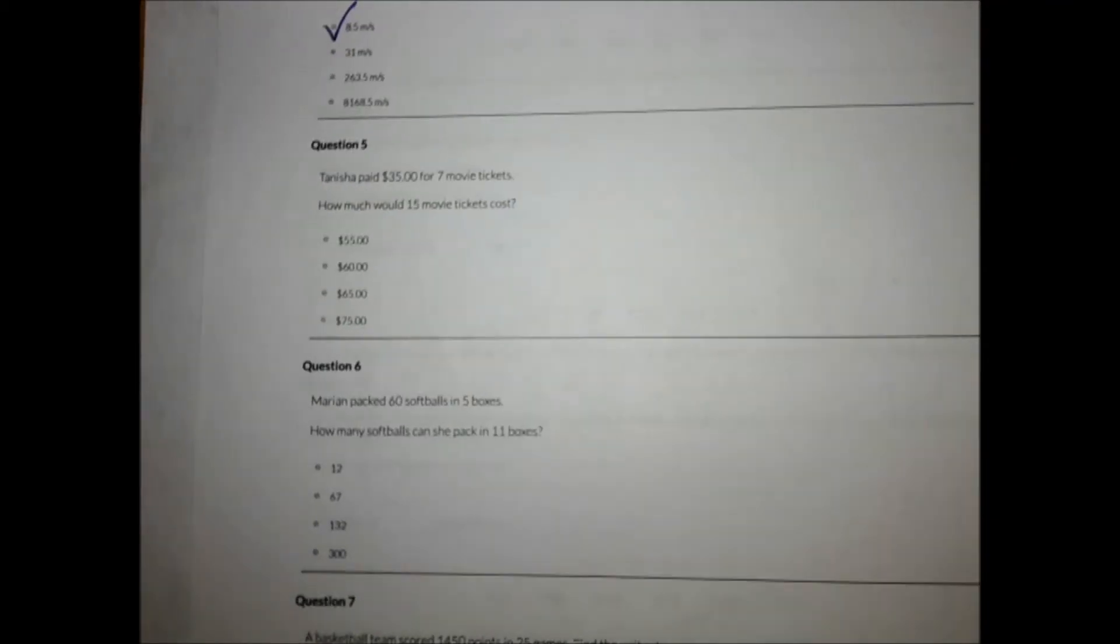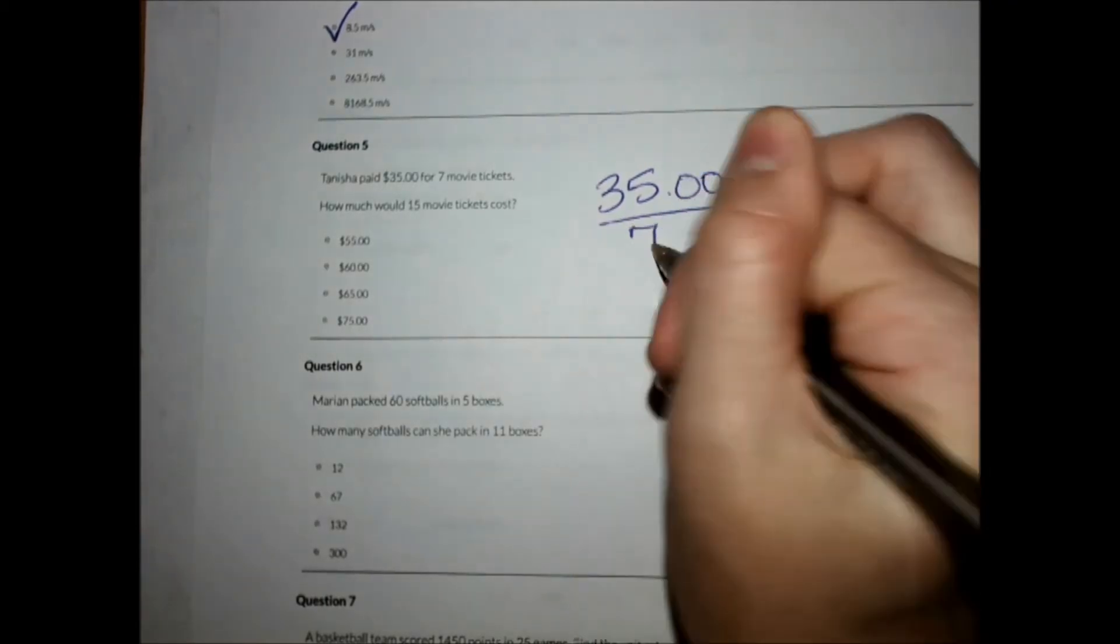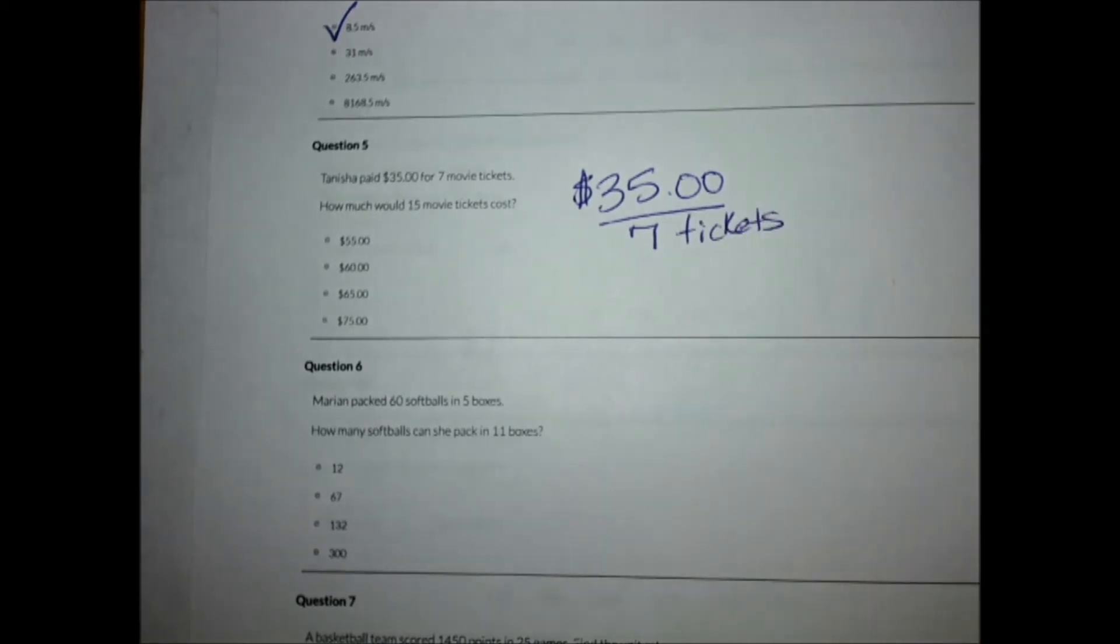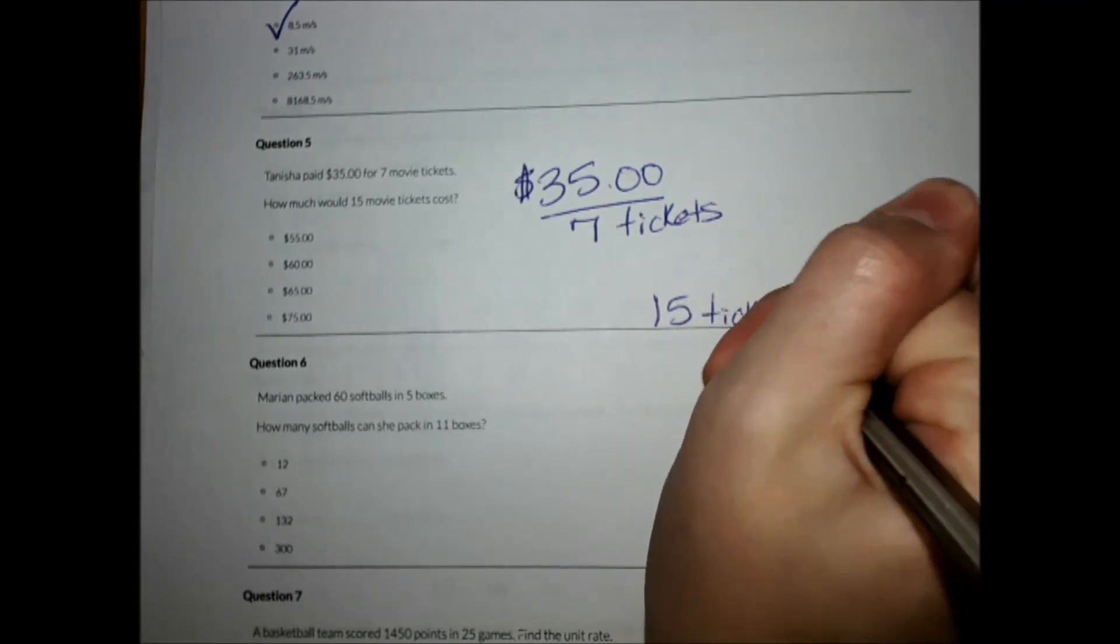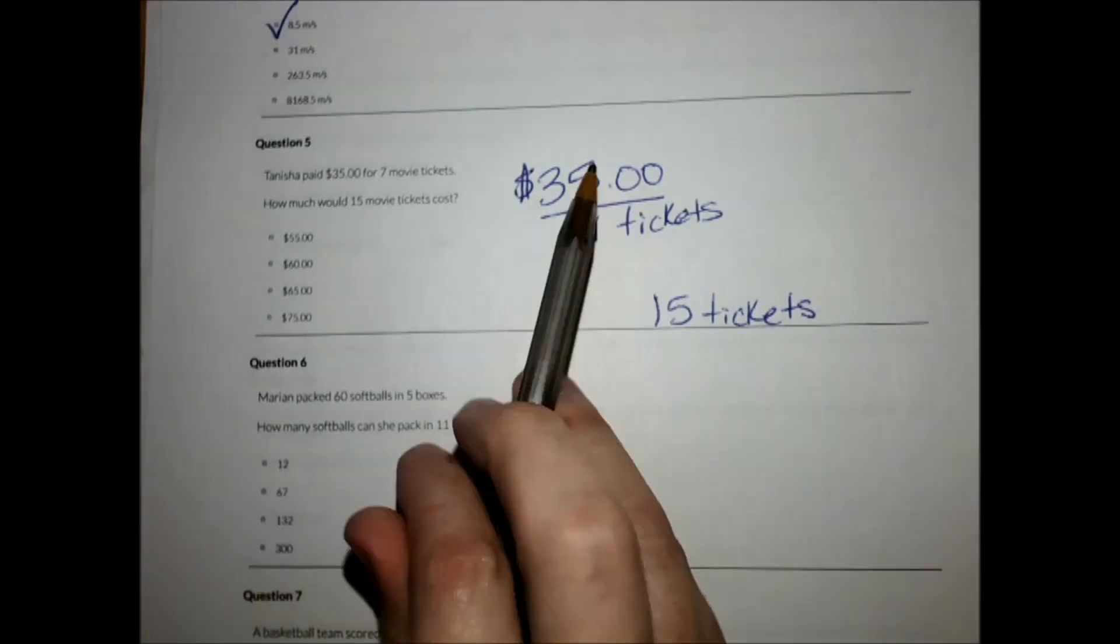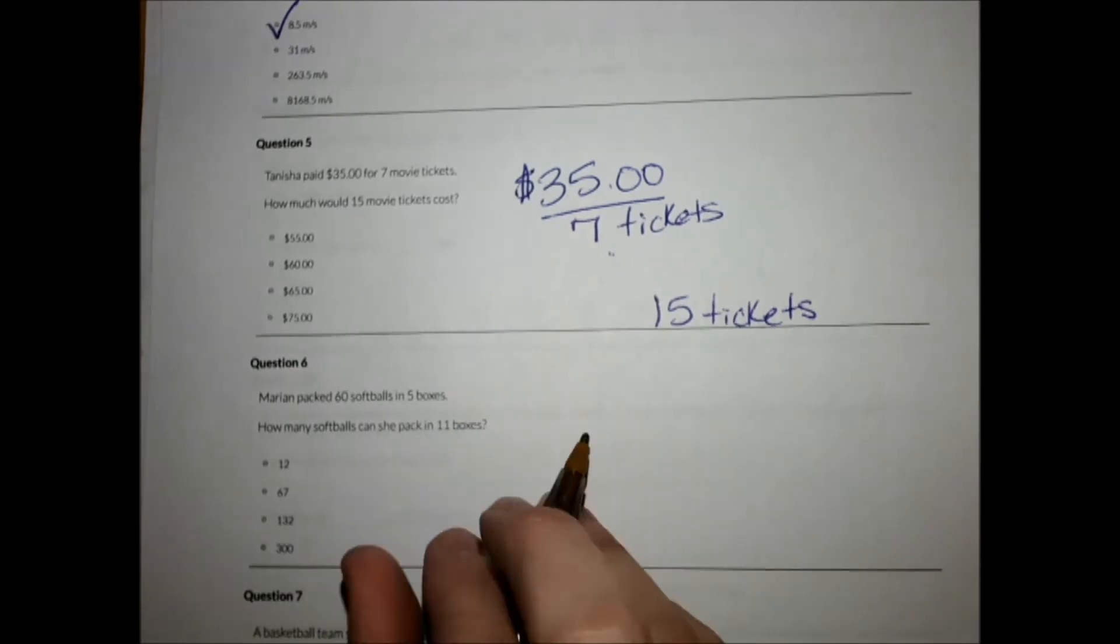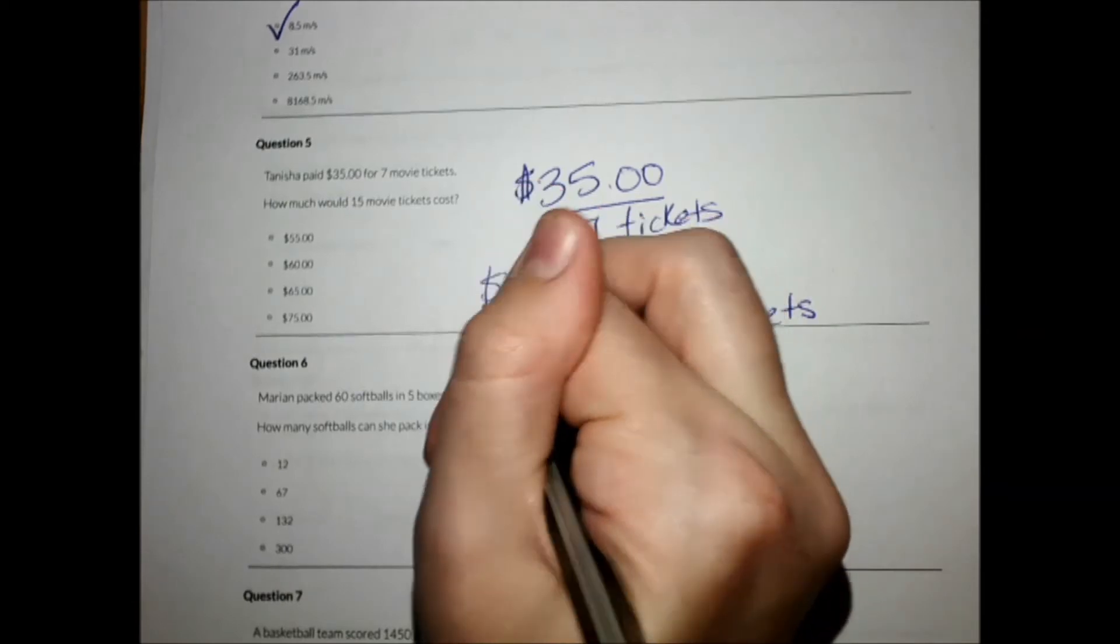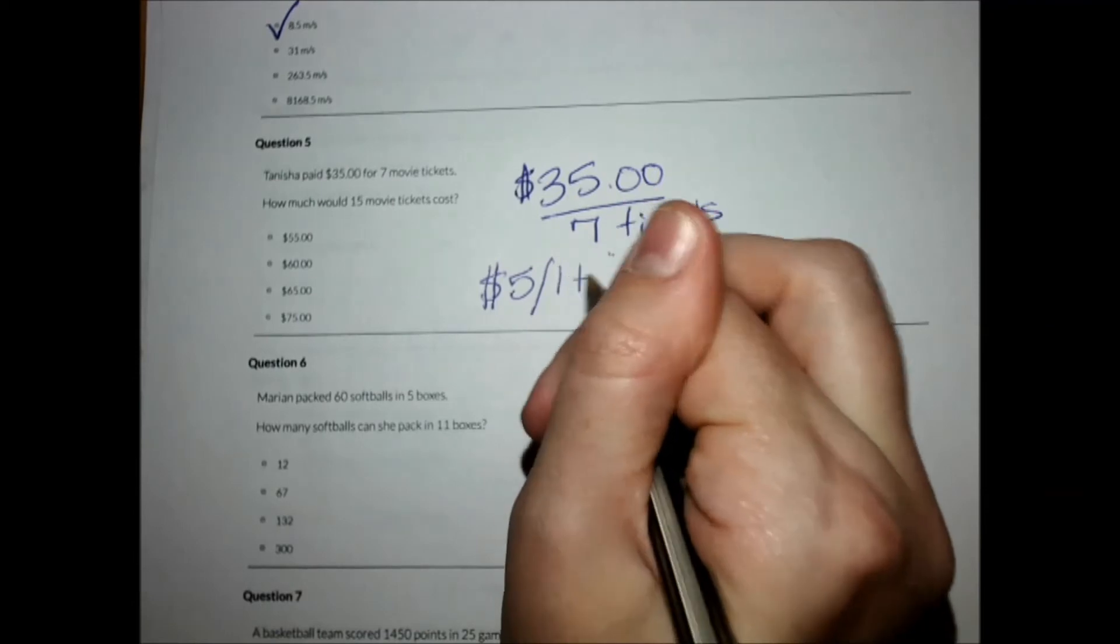Number five. Tanisha paid $35 for seven movie tickets. How much would 15 movie tickets cost? This is when it comes in very handy to have your unit rate. So I need to figure out how much it would be for one ticket. I'm going to divide $35 by 7. And I know my multiplication table, so I know that this is $5 per one ticket.